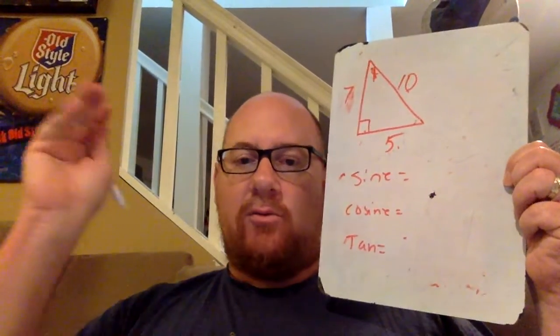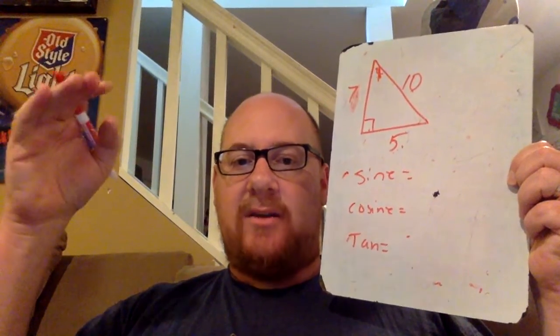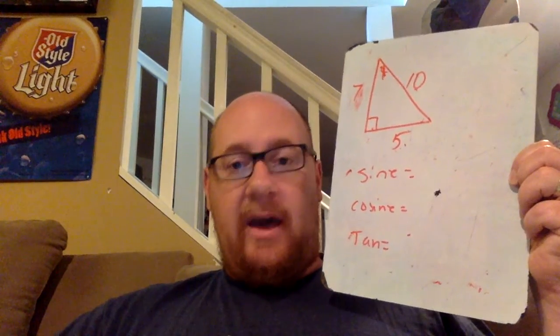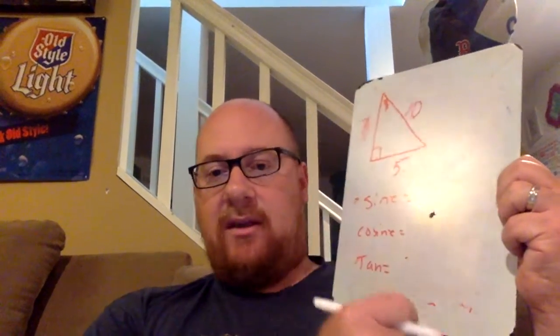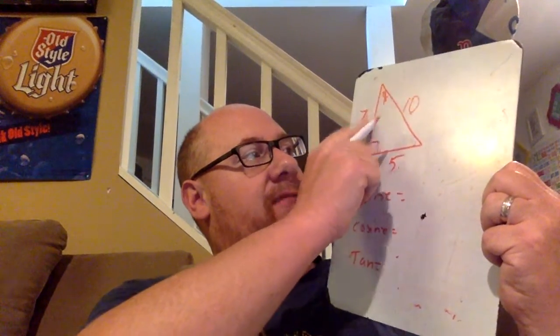All that means is the ratio. It's a ratio of given measurements based on an angle. So in my triangle, I have angle 1, which is missing. I have a side of 5, 7, and 10.